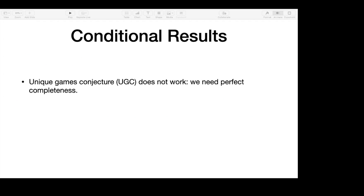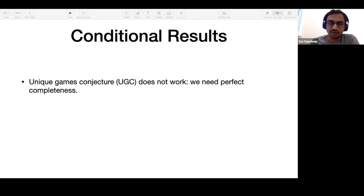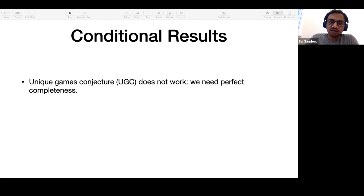To get around this barrier, people have tried to look at conditional results — assuming some sort of hardness conjecture and then proving that graph coloring is hard as well. Many of these conditional results are based on the unique games conjecture. However, for our problem, the unique games conjecture does not work because we need perfect completeness.